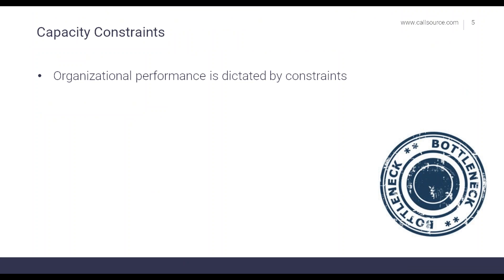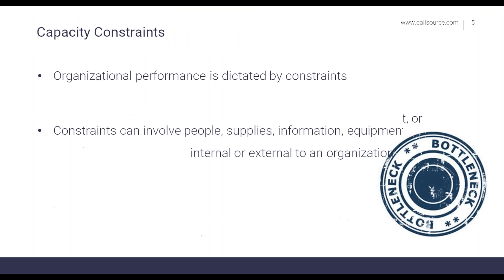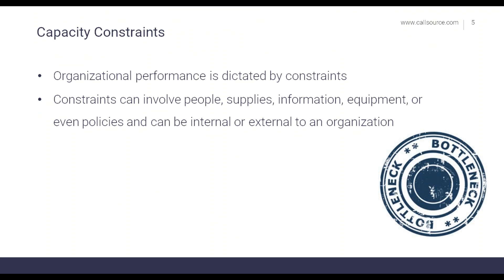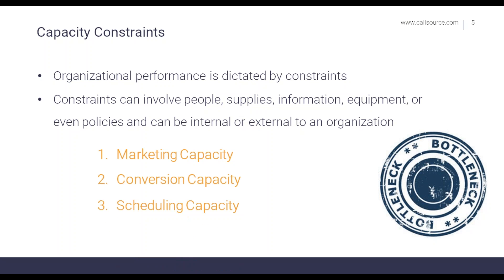Capacity constraints are restrictions that prevent your business from maximizing its performance and reaching its goals. Constraints can involve people, supplies, information, equipment, or even policies, and could be internal or external to the organization. The main capacity constraints we're going to look at are: marketing capacity — the ability to generate leads to acquire new clients; conversion capacity — setting as many appointments as possible; and scheduling capacity — the scheduling availability of the office. These essentially determine or limit the size of the business.